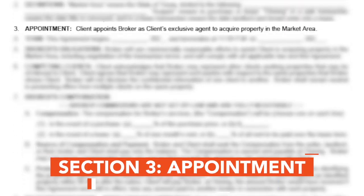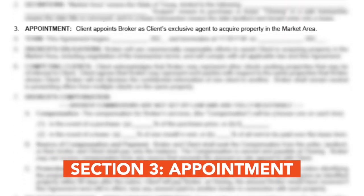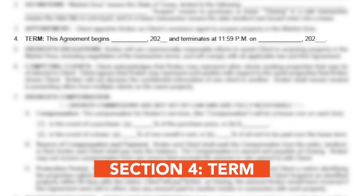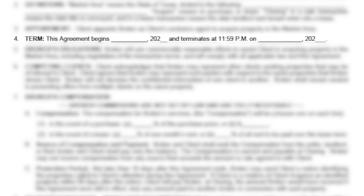The third section is appointment. This section doesn't require you to fill anything in, but it does state that the named broker is the buyer's exclusive agent. The fourth section is term. This agreement must start and end on a specific date. It's important to fill in the termination date. If you fail to do so, this agreement is not enforceable under state law.